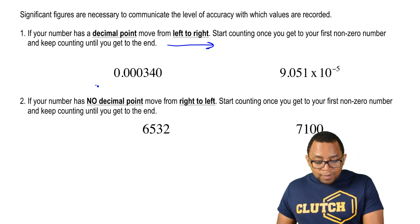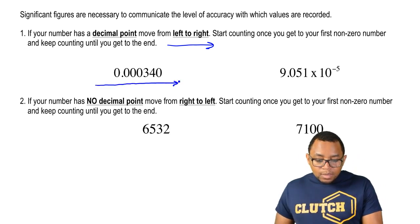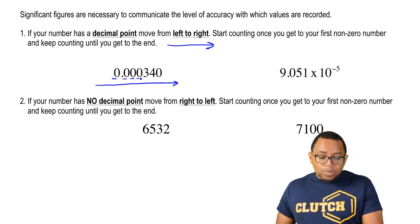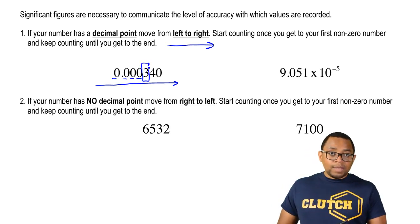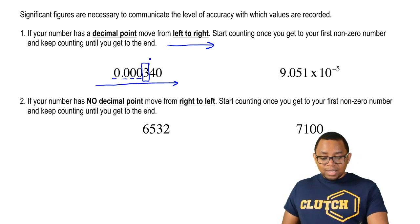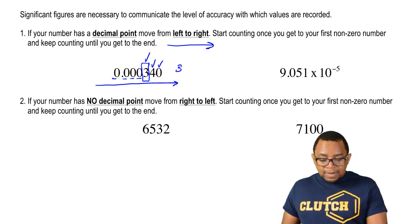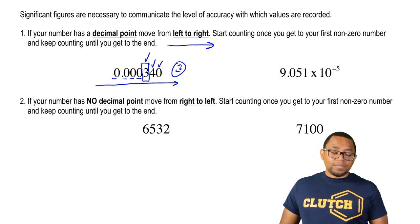So we're going to start moving from left to right. When we get to our first non-zero number, that's when we start counting. Our first non-zero number here is three. We start counting here at three and we count all the way to the end — that'd be one, two, three significant figures in this value.